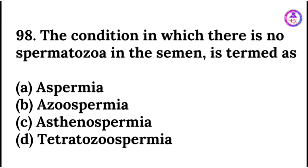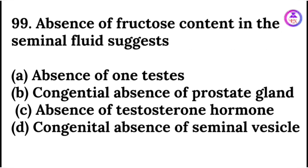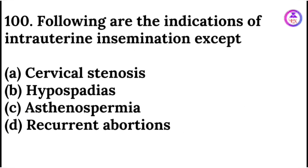The condition in which there is no spermatozoa in semen is termed as azoospermia. Absence of fructose content in seminal fluid suggests congenital absence of seminal vesicles. Following are indications of intrauterine examination — except: recurrent abortion is not an indication of intrauterine examination.